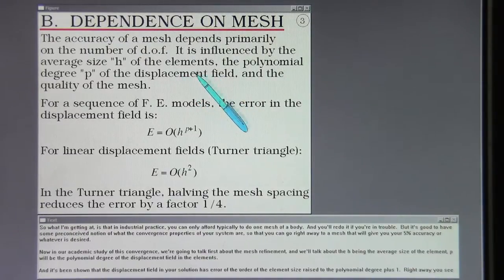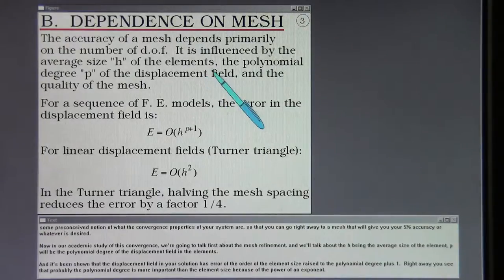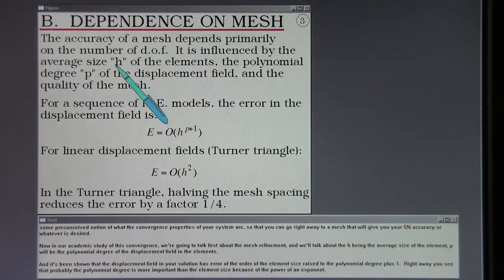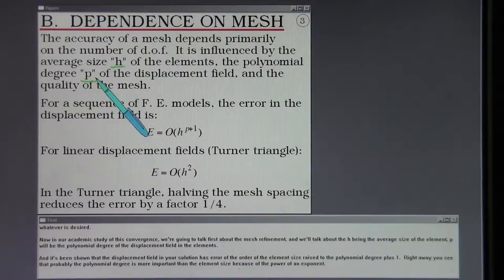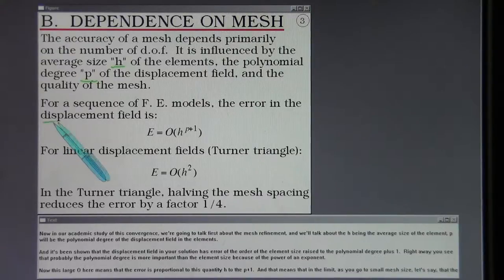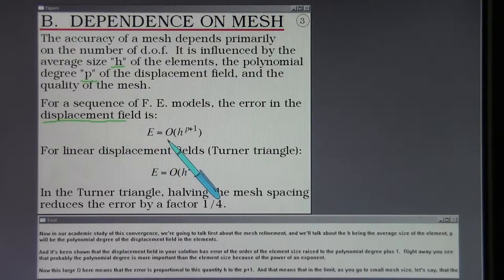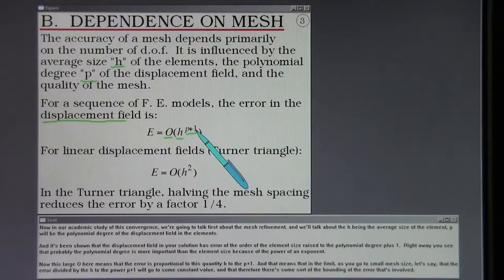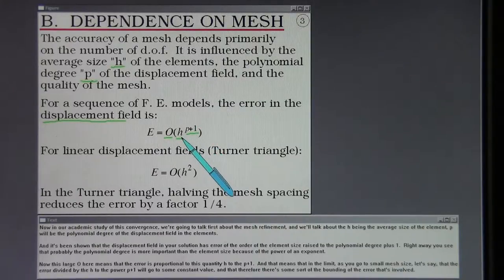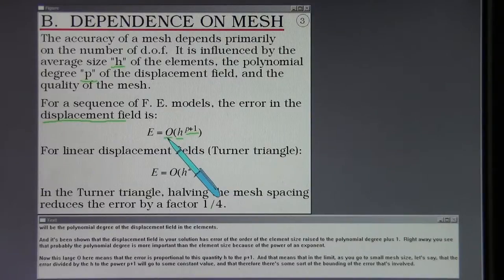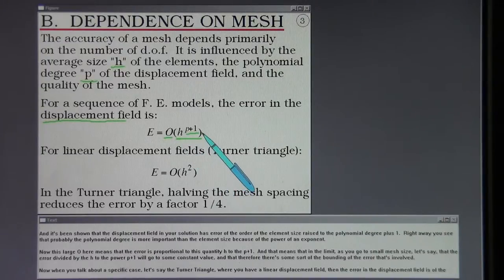Now in our academic study of this convergence, we're going to talk first about the mesh refinement. And we'll talk about H being the average size of the element. P will be the polynomial degree of the displacement field in the elements. And it's been shown that the displacement field in your solution has error of the order of the element size raised to the polynomial degree plus 1. Right away you see that probably the polynomial degree is more important than the element size because of the power of an exponent.